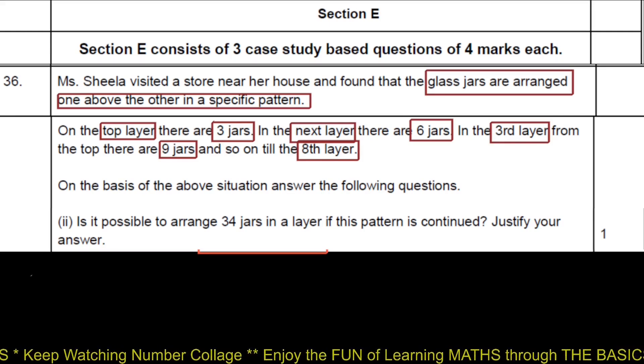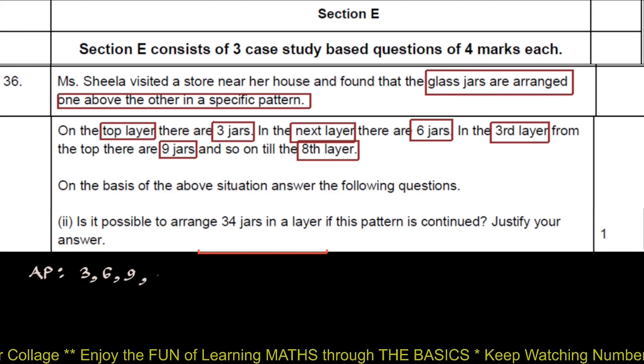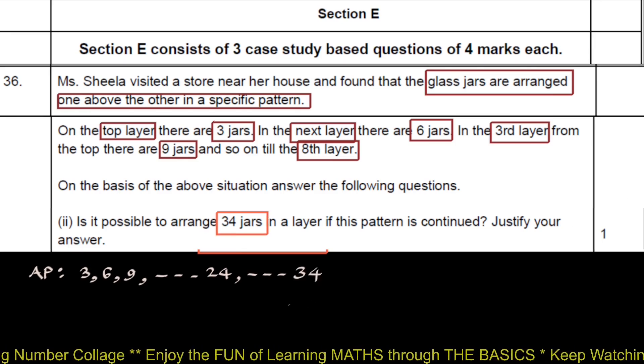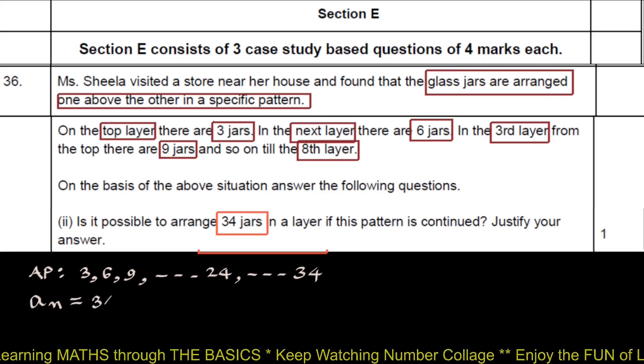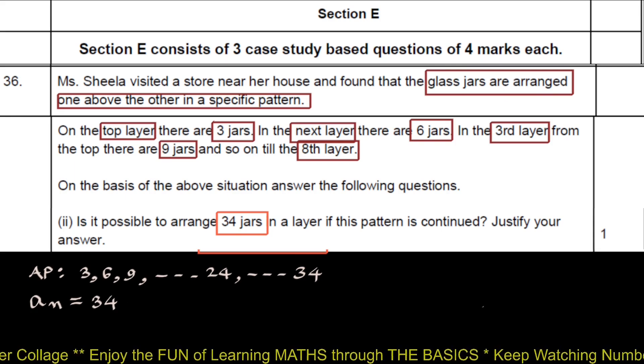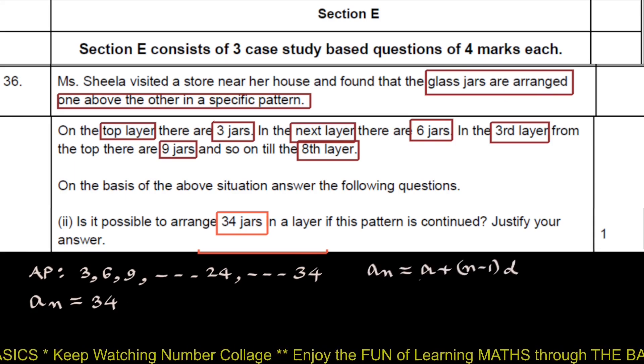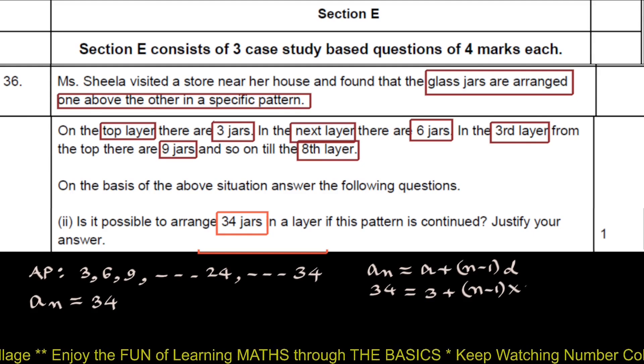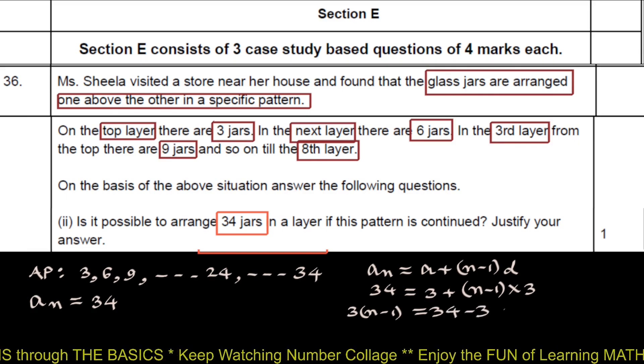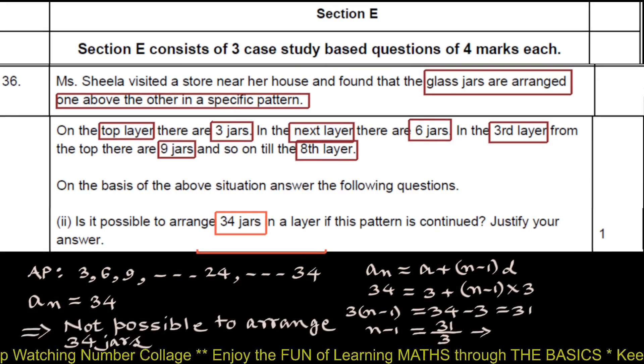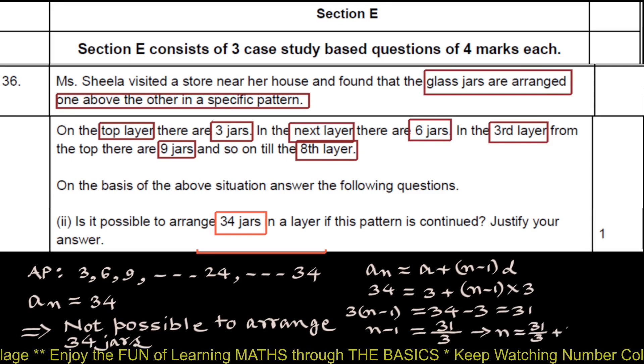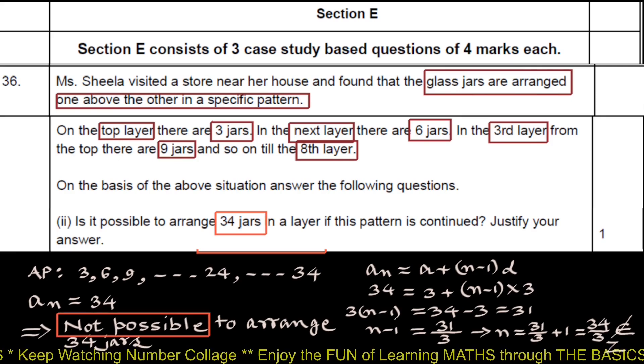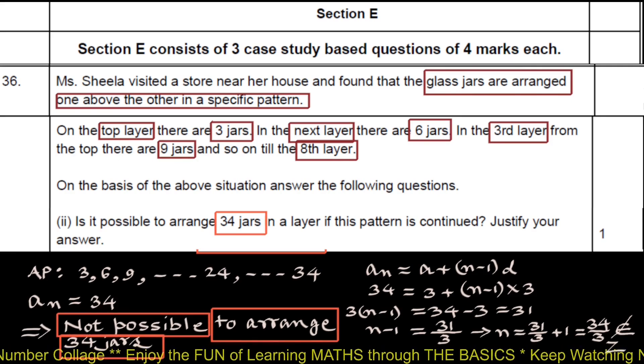The AP that we have just found out is 3, 6, 9, etc, 24. If there are 34 jars, the nth term will be 34. And we have to check whether the nth term 34 will be nth term of this AP or not. AN is A plus N minus 1 into D. AN is 34 equals 3 plus N minus 1 into 3. So 3 into N minus 1 is 31. N minus 1 is 31 upon 3, and N is 34 upon 3, which is not a positive integer. Therefore, it is not possible to arrange 34 jars if this pattern is continued.